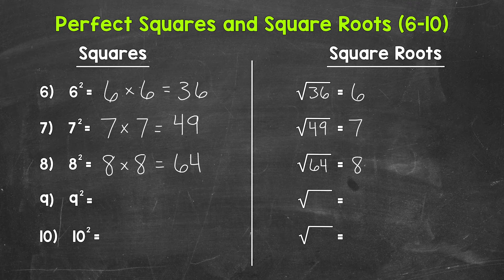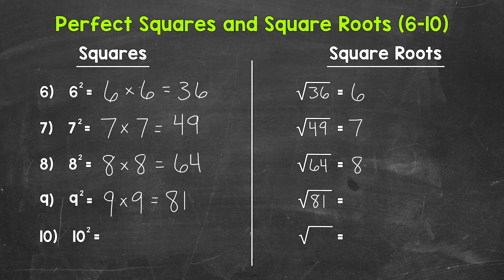Let's move on to number nine, where we have nine squared. That means nine times nine, which equals 81. So nine squared equals 81, and that means the square root of 81 equals nine.